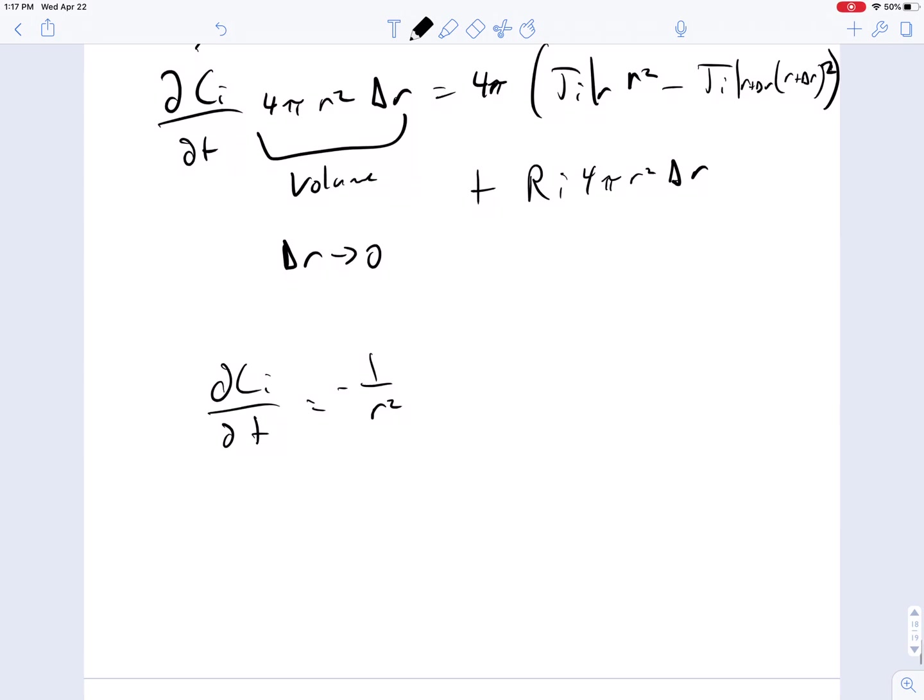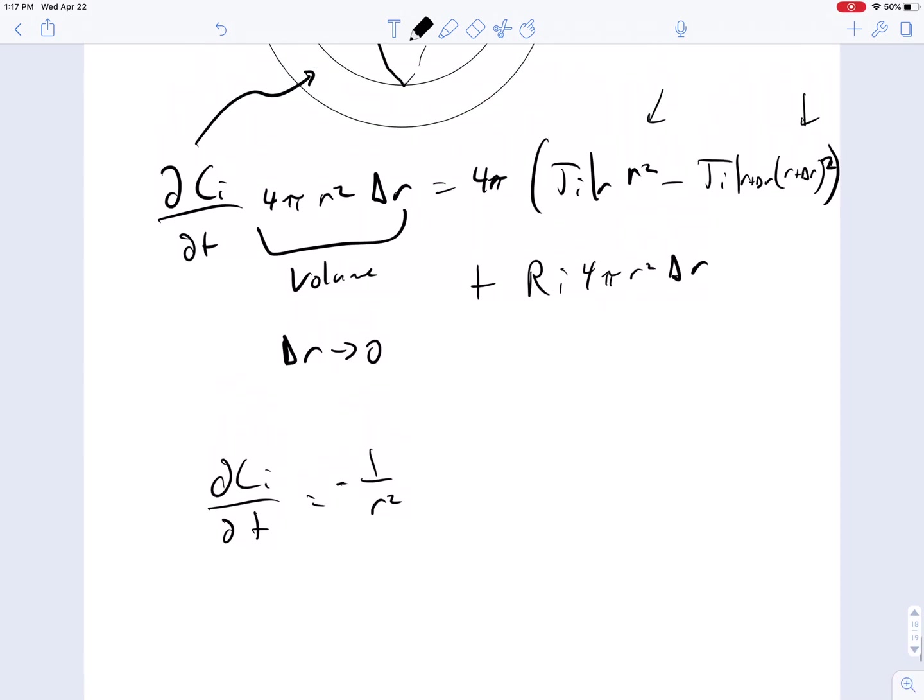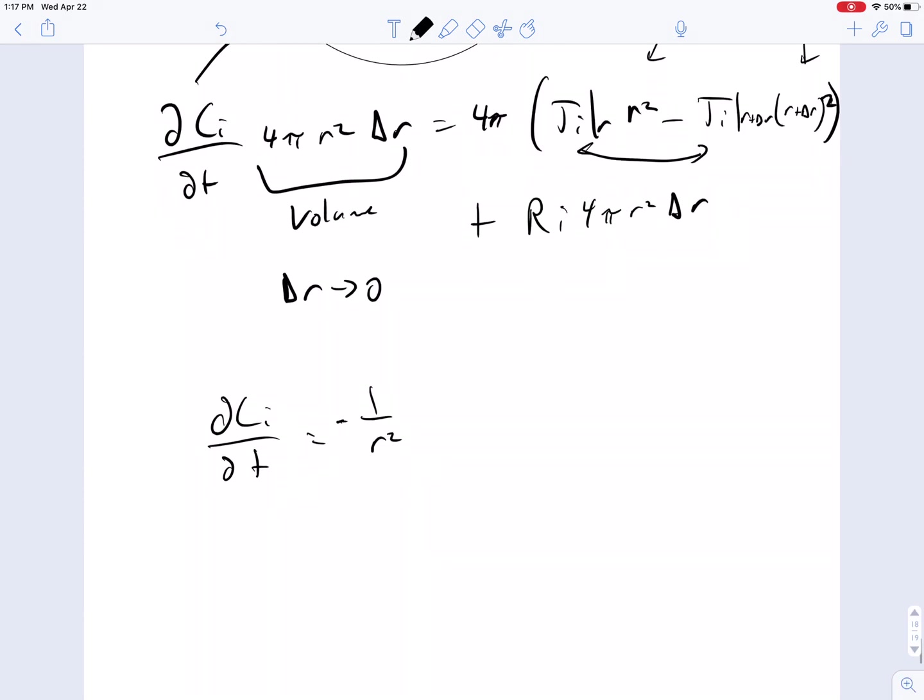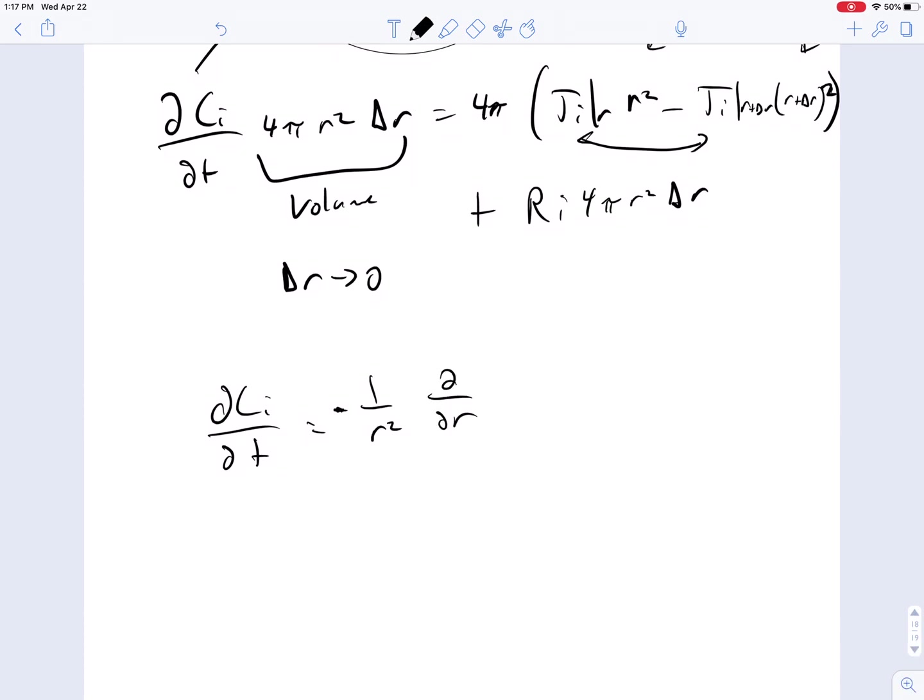1 over r squared, because we flip the order of these two, and then use the fundamental theorem of calculus to calculate the derivative, so it's minus 1 over r squared, partial/partial r, ji at r times r squared, plus Ri.